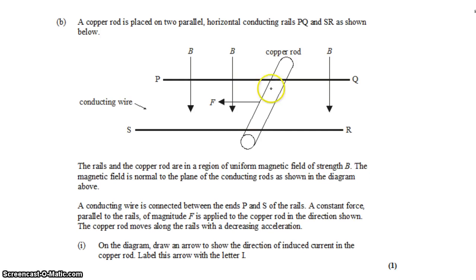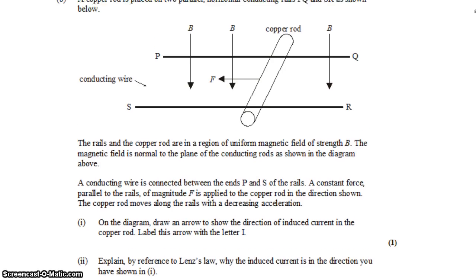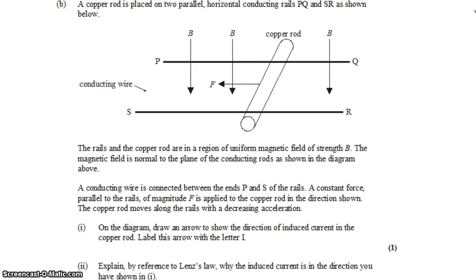We have a copper rod, that's this thing here, placed on two parallel horizontal conducting rails. The rails and the copper rod are in a region of a uniform magnetic field strength B. The field strength is normal to the plane of the conducting rods as shown in the diagram. So it's a three-dimensional diagram where you can imagine the wires all laying flat on a table and the magnetic field going straight into the surface of the table.